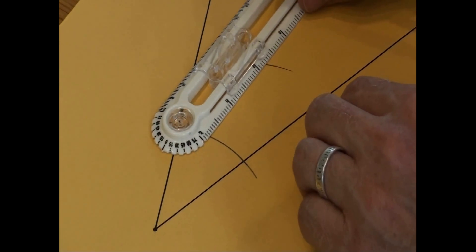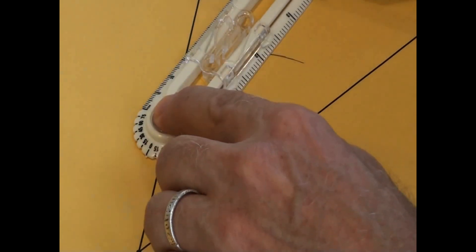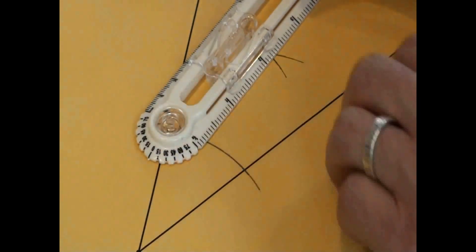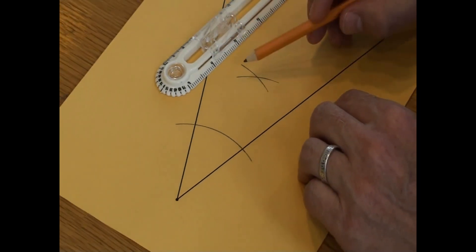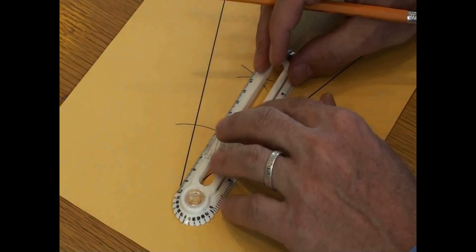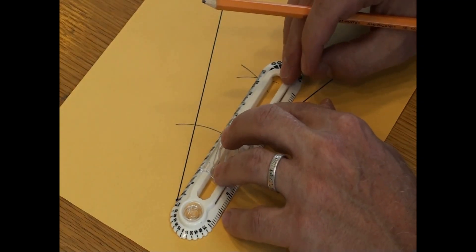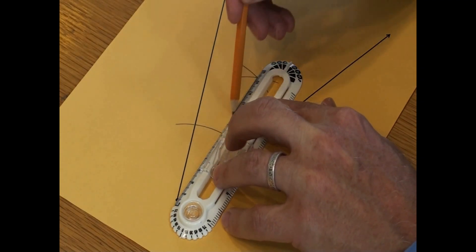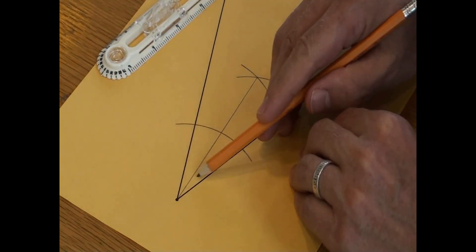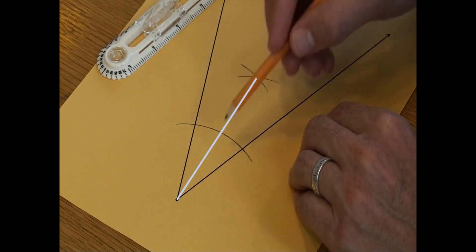I will now strike an arc in the interior of the angle. Now I'll place my pivot point on the opposite intersection and strike an arc inside the interior of the angle. Using the compass's straight edge, I will connect the intersection of the two arcs to the vertex. This new line segment I created bisects the original angle.